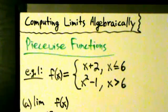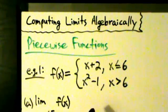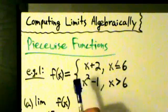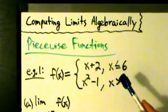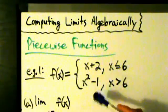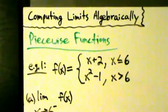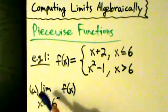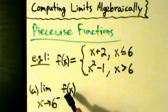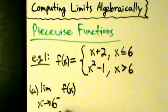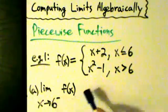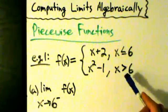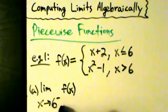When we do limits with these, it's pretty much still direct substitution, but because it's defined in pieces, we have to sometimes worry about subtle details. For example, in part A here, we're taking the limit as x goes to 6 from the left of f(x). 6 is a value of x where the function splits into two pieces, so we need to be careful about what we're doing here.